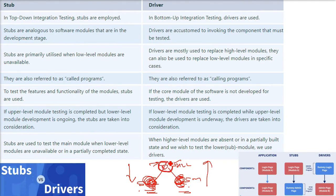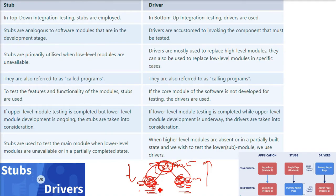Stubs are also called called programs, called modules, or called functions. Drivers are called the calling program. A calling program sits above the lower-level module — it calls those modules. Stubs are the ones being called, so they are referred to as called programs.